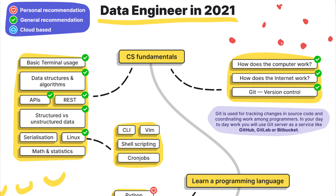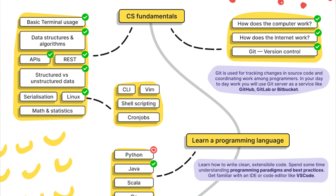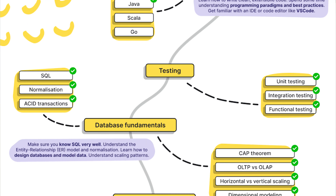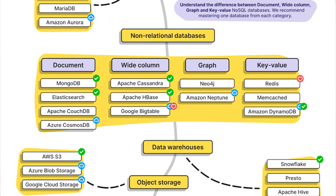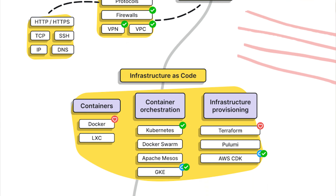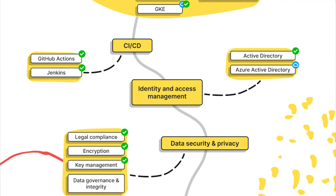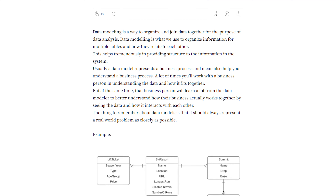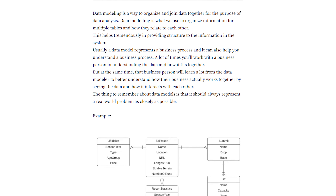Once you get started, you need to begin learning the application of these skills. There are different paths — the data science route takes Python and SQL toward analytics and statistics, or you take Python and focus on engineering and infrastructure, which is the data engineering route. That means learning data modeling, data pipelines, and the cloud. All of these skills are necessary to go from being an analyst to a data engineer.